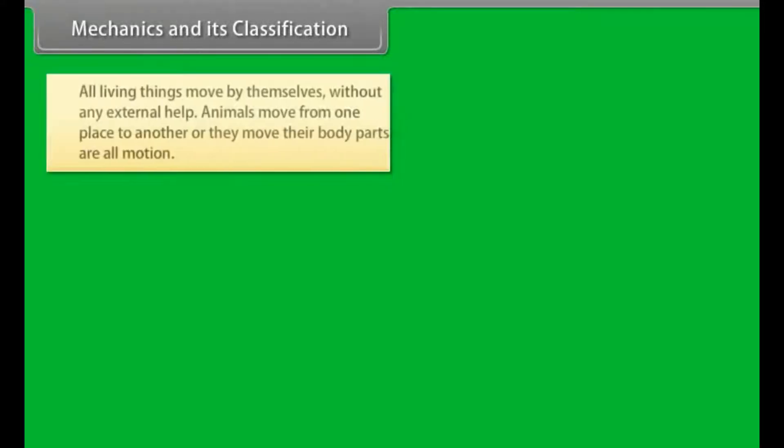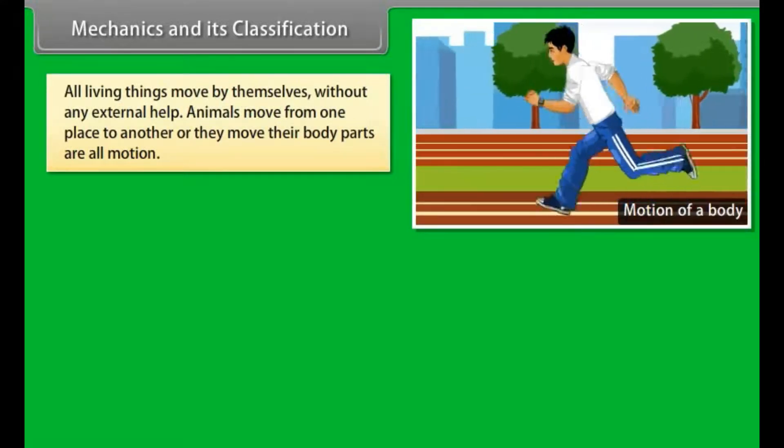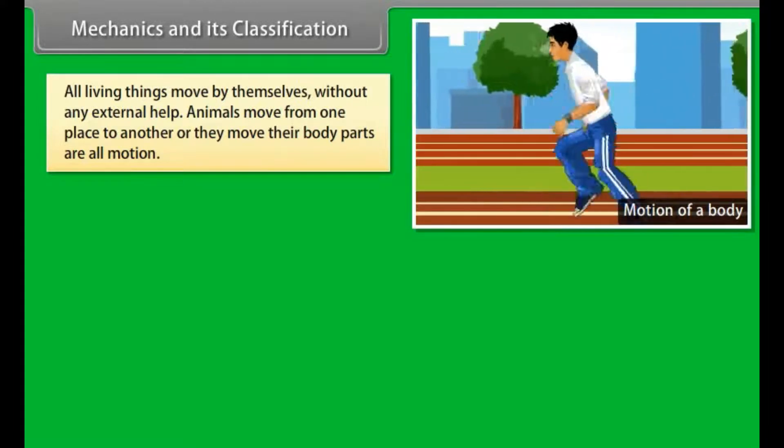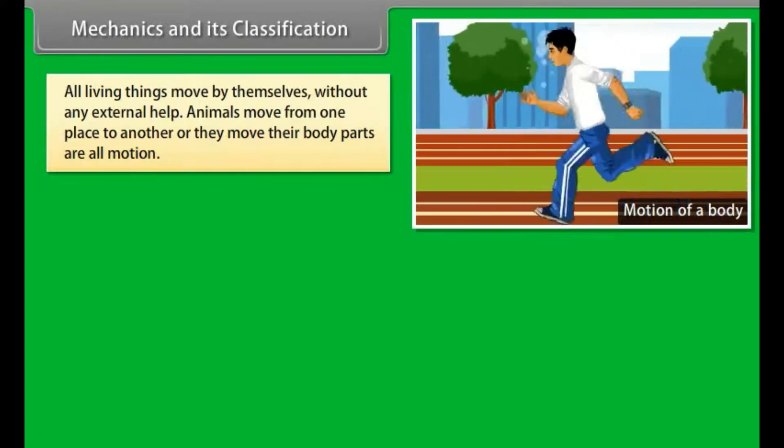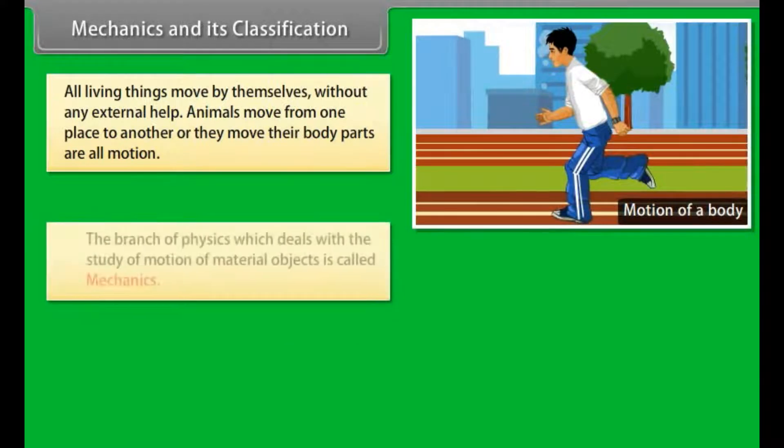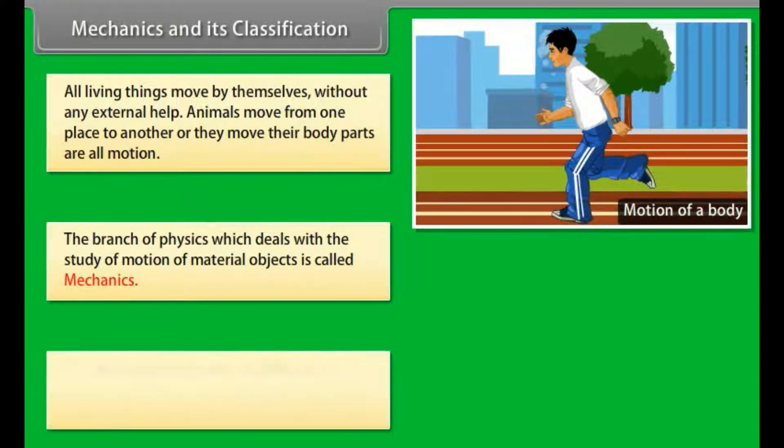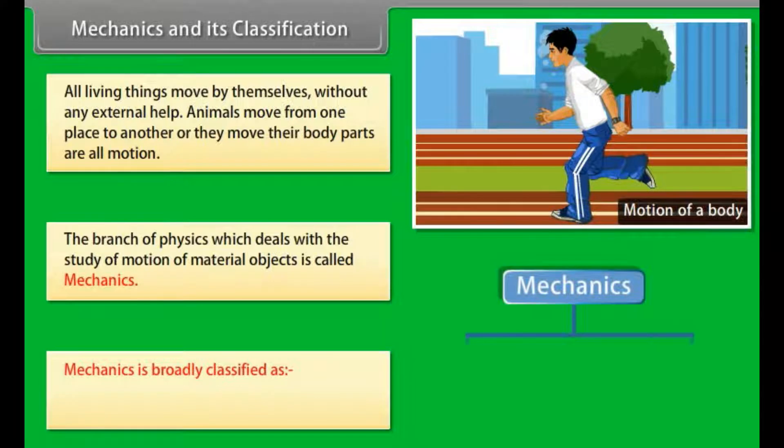Mechanics and Its Classification. All living things move by themselves without any external help. Animals move from one place to another or they move their body parts. The branch of physics which deals with the study of motion of material objects is called mechanics. Mechanics is broadly classified as 1. Statics, 2. Kinematics.